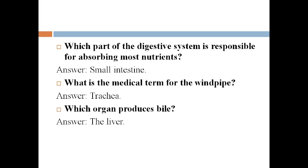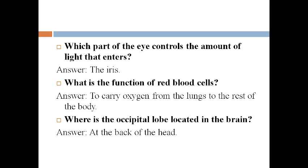Which organ produces bile? The bile is secreted by the liver. Which part of the eye controls the amount of light that enters? The part of the eye that controls light is the iris.